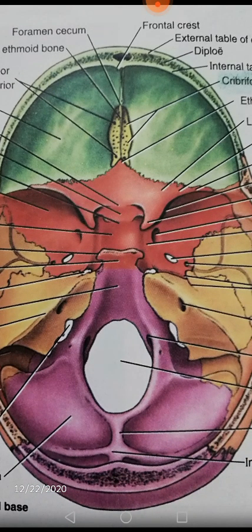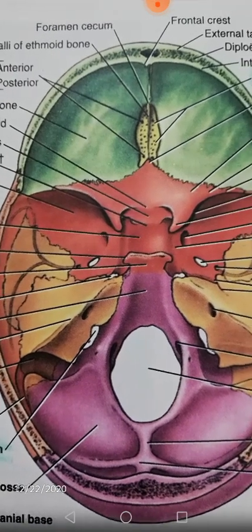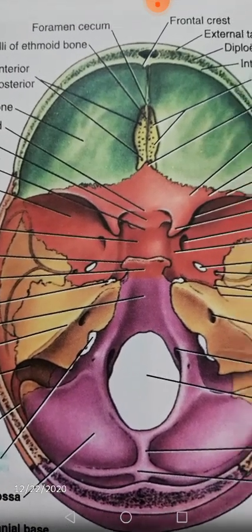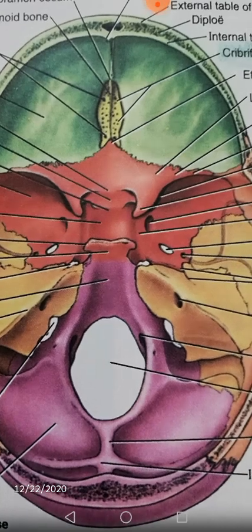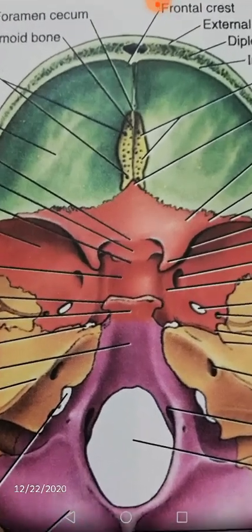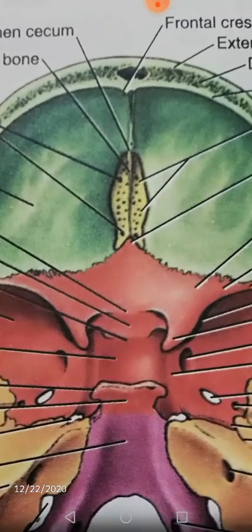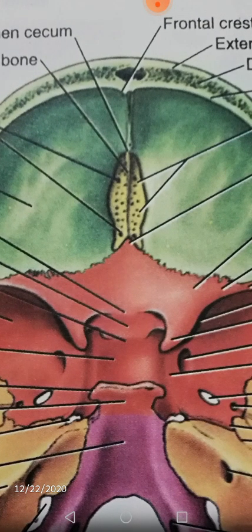On both sides of the dorsum sellae and tuberculum sellae are the middle cranial fossa. The major part colored in pinkish or purple, along with the edges of the petrous part of the temporal bones, is the posterior cranial fossa. In the anterior cranial fossa, concentrate on the central cribriform plate of the ethmoid bone.